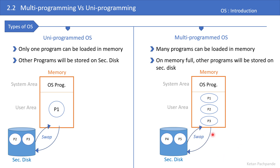Even in the multiprogrammed environment, if I want to execute process P4, I first have to shift one or more processes from memory to the secondary disk. Then space becomes available in memory and I can load process P4 from secondary disk and execute it. So here also, with the help of swapping, processes on the secondary disk can be executed.